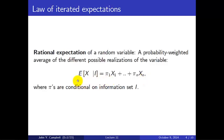So pi 1 is the probability of outcome 1, and then you get value x1, and so on through all the different possible scenarios until we get to pi n, the probability of the nth outcome.